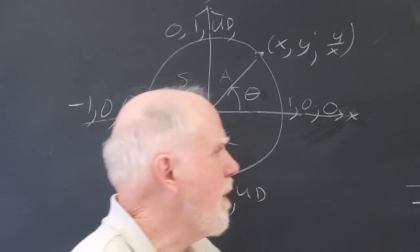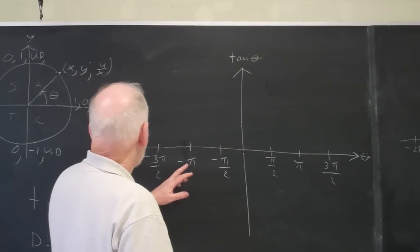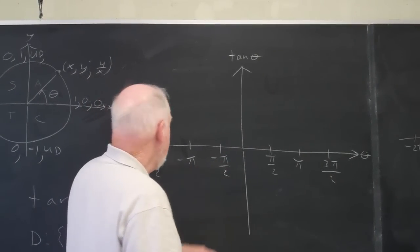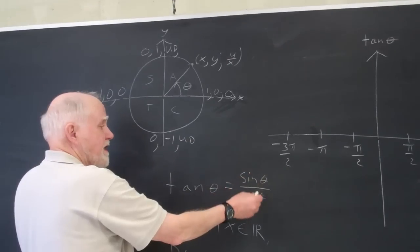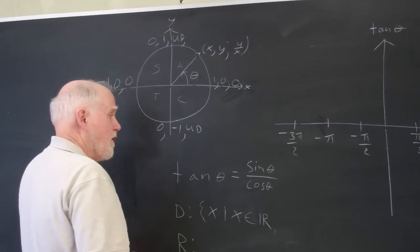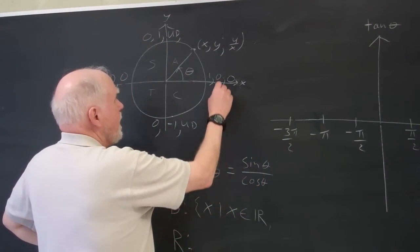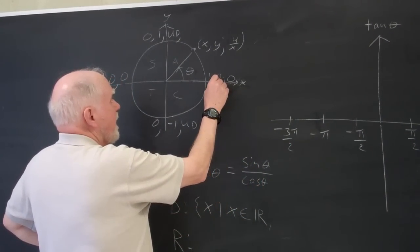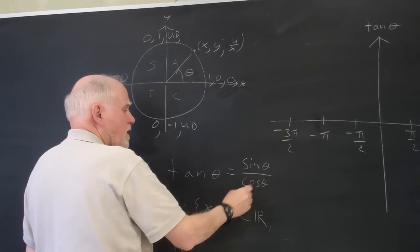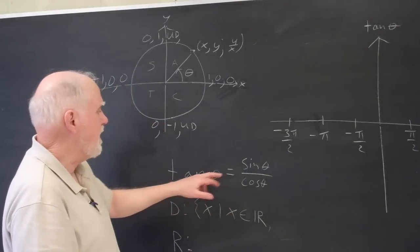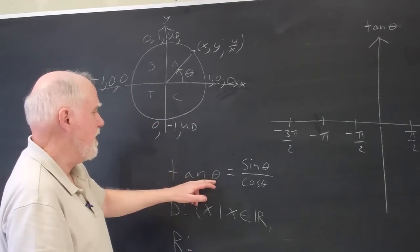Now I'm all set to graph the tangent. The tangent is the sine over the cosine. Wherever the sine is zero — which would be zero and pi — the cosine will be either one or negative one, so the tangent will be zero. Zero over any number is zero.